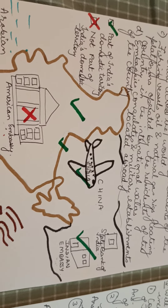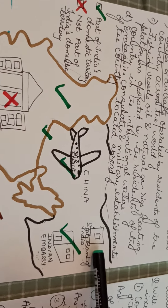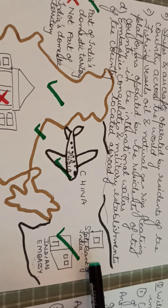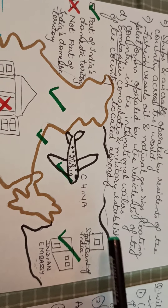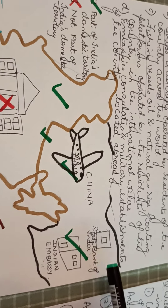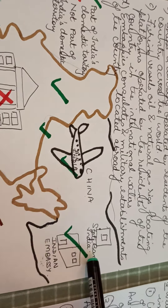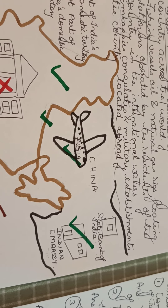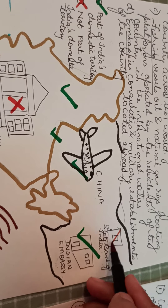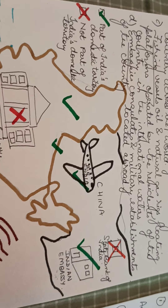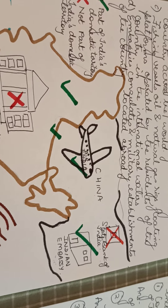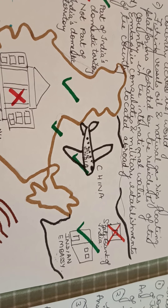One last example in this diagram: I have made the branch of State Bank of India in China. Although it is an Indian bank located in China, is it part of India's domestic territory? No, it is not part of India's domestic territory — it is part of China's domestic territory.